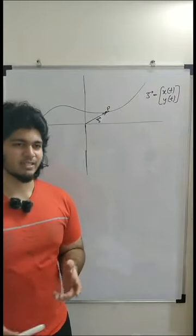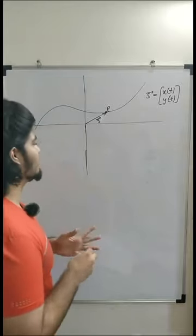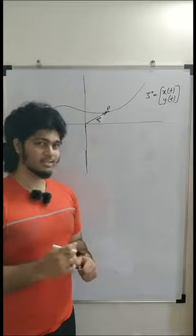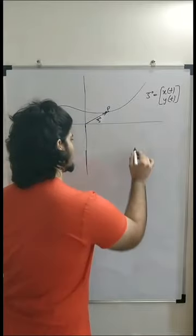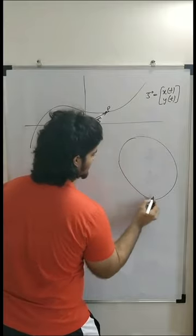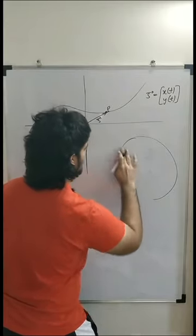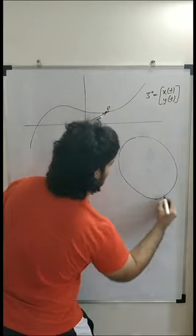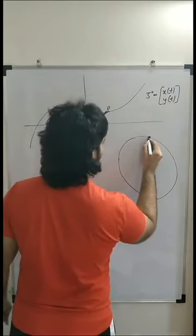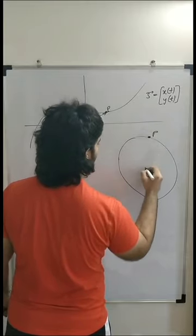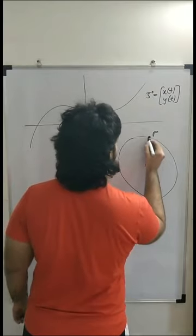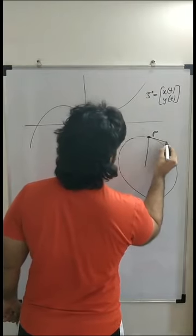So the approach we are going to be taking is we're going to be looking at the centripetal acceleration. If you have a point particle which is going along a circular path—that is not a circle, so yeah, that's a bit better—let's say you have a point particle P which is going along a circular path.